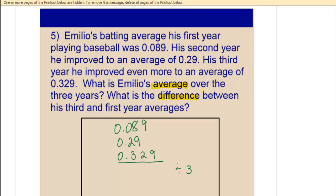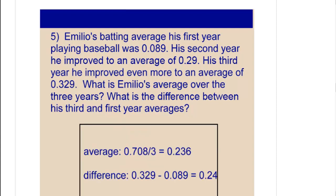So go ahead and try these two problems and check back and you'll see the answer to make sure you did these correctly. So the average, you end up with the sum of .708 and then you divide that by three and get .236.